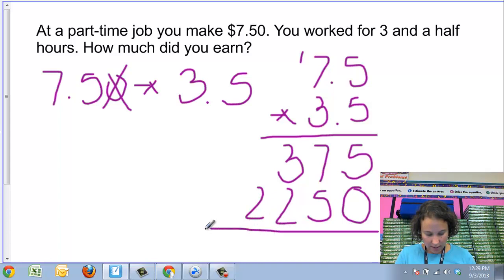So now I've done 75 times 5, which gave me 375, and I've done 75 times 30, which gave me 2250. I need to combine those two together by adding.